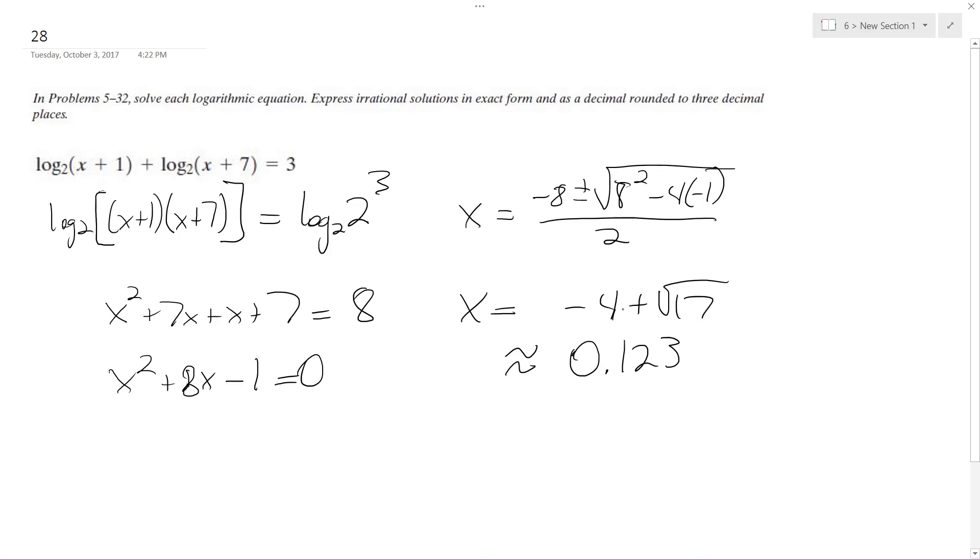So, exact answer is negative 4 plus the square root of 17, and then approximate is 0.123. Alright, that's it.